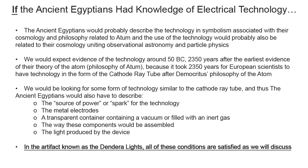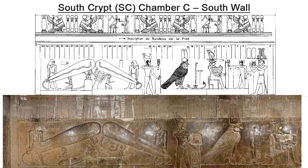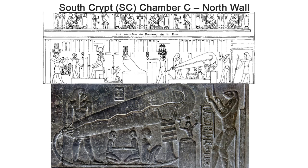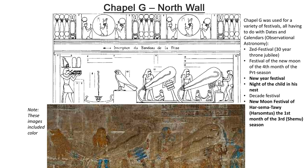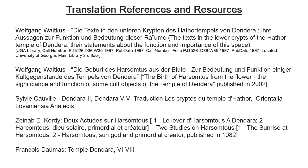It is my assertion that in the artifact known as the Dendera lights, all of these conditions are satisfied. The Dendera lights refers to seven various images found in two buildings at the Dendera temple complex in ancient Egypt. In the Hathor temple of Dendera, images are in two rooms: two images on the south wall of the South Crypt chamber, one on the north wall of the South Crypt chamber, one on the south wall of Chapel G, and two on the north wall of Chapel G. The images in Chapel G were in color, whereas those in the South Crypt chamber were not. Chapel G was used to celebrate cosmological festivals like the New Year and the Night of the Child in His Nest. There is also one image in the temple of the birth of Isis.